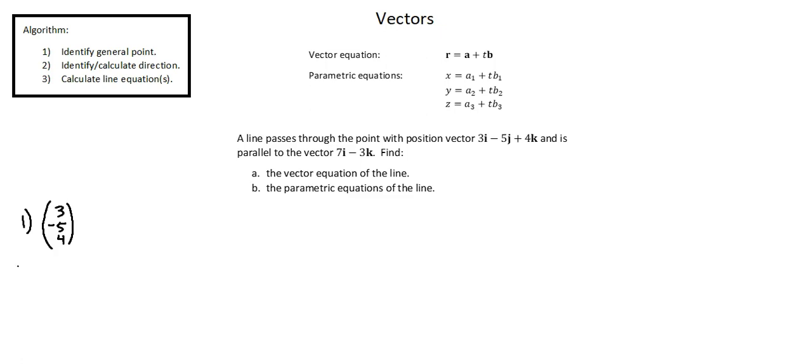Step two, identify or if needed calculate direction. In this case we'll be able to identify the direction. If you're given two points then you select one point as the starting point which you would identify as your general point in step one. Then to calculate the direction your math is second point minus general point and that will produce the direction vector that you need.